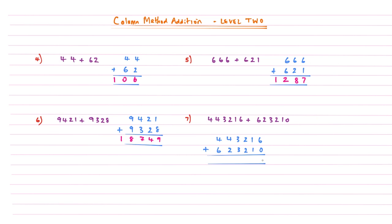Example seven: starting from the right-hand side — 6 add 0 is 6; 1 add 1 is 2; 2 add 2 is 4; 3 add 3 is 6; 4 add 2 is 6; then 4 add 6 gives 10, a two-digit number, so we write it starting underneath the invisible column. Notice that the columns are still lined up to make it easy to read.